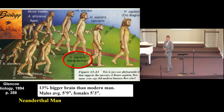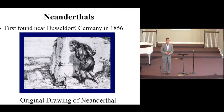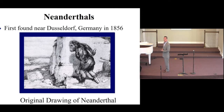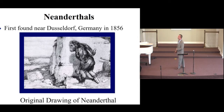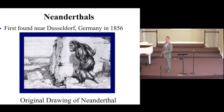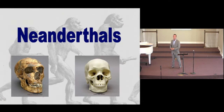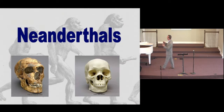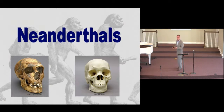Next is Neanderthals, first discovered in 1856 in Düsseldorf, Germany. The original drawing depicted him as clearly man-like, standing, very muscular — if we're to believe the drawing, he is an ape man. But if you look at the Neanderthal skull, it looks strikingly similar to a modern Homo sapiens skull. The only slight variation is the heavier brow ridge, but many modern humans have a heavier brow ridge — that's not outside our morphological characteristics.